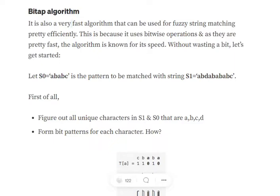Assume that we have the string 'abdabaabc' as the input string s1, where we wish to find a fuzzy match for the string 'ababc'. We will be considering s0 as the string for which we are trying to find a pattern in s1 — so s0 is the string we are trying to find a fuzzy match for.